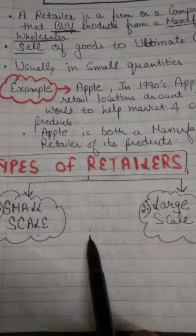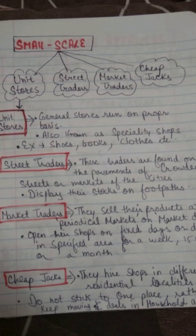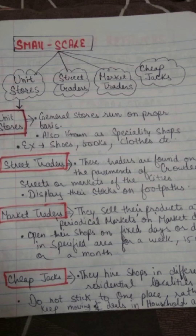Retailers are of two types: small-scale retailers and large-scale retailers. Small-scale retailers can be classified into four categories. First are unit stores, also called specialty shops — these are general stores run on a proprietary basis, like shoe shops, book shops, and clothing shops. Second are street traders — these traders are found on the pavement of crowded streets or markets in cities, displaying their goods in high-footfall areas.